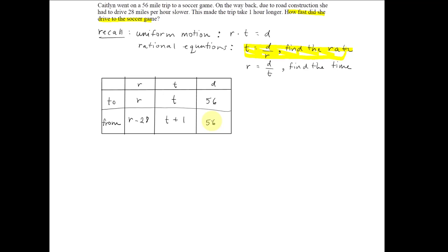So setting up our equation using the equation t equals d over r. So we get t going to the soccer game equal to the distance, 56, over the rate, in this case, r.